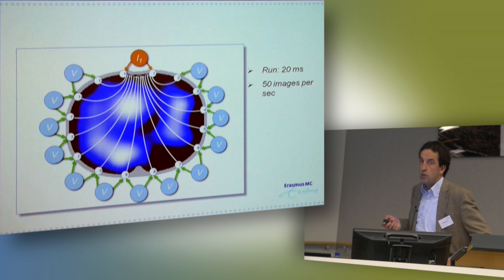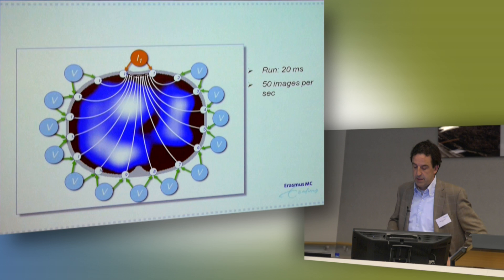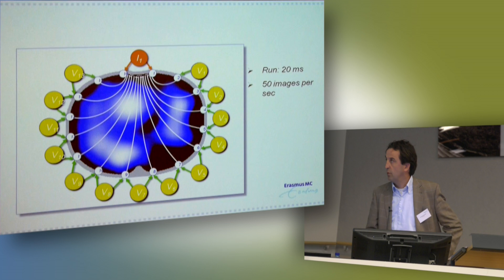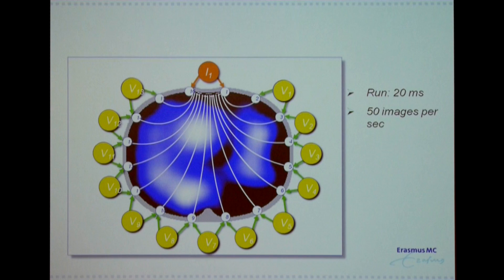Between a pair of electrodes a small current is injected, and you are measuring the time needed to reach the other electrodes. In one second you are collecting 50 digital images. Here in white is a large impedance change, and the impedance change in the thorax is due to ventilation — air coming in. Blue is smaller impedance change, and black is no impedance change. Like the CT scan, this is the right lung, and here in this example this is the left lung.